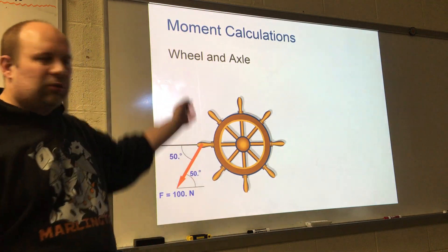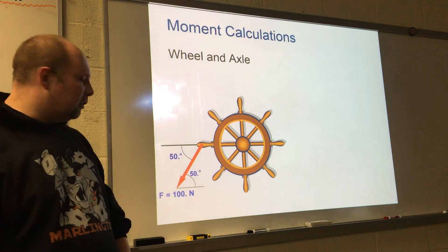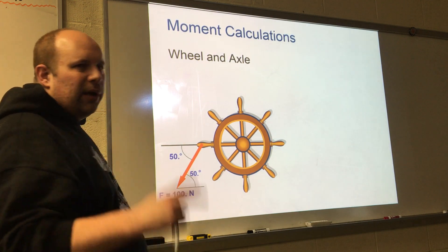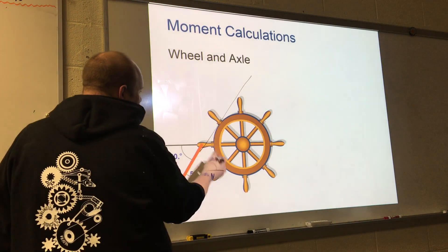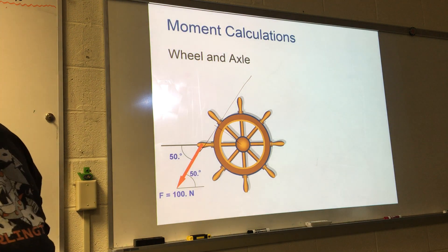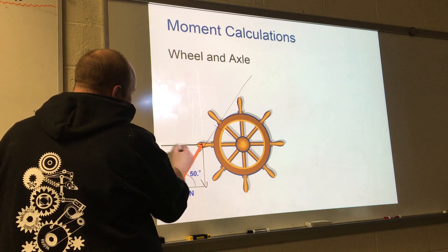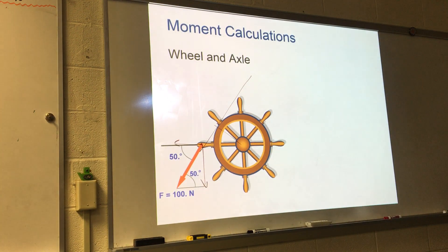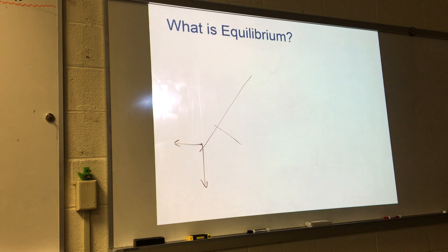What if the force were applied at an angle — say 50 degrees? We could do this two ways: extend the force line and measure the perpendicular distance using trig, or break the force into vertical and horizontal components and calculate each separately. We'll deal with that on another day.